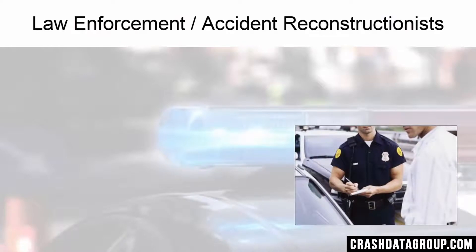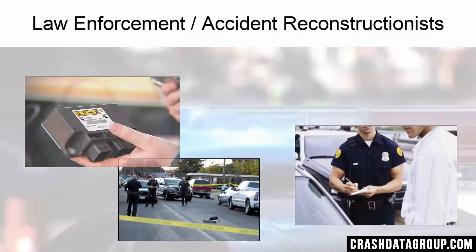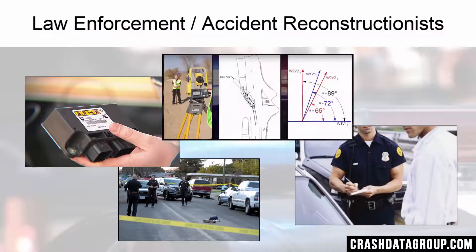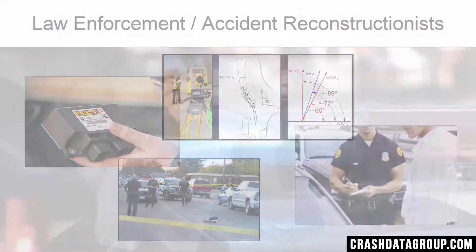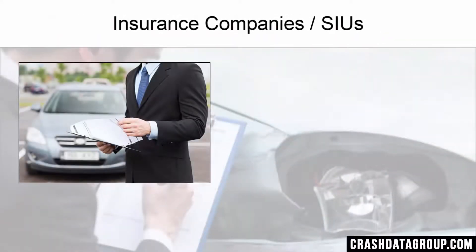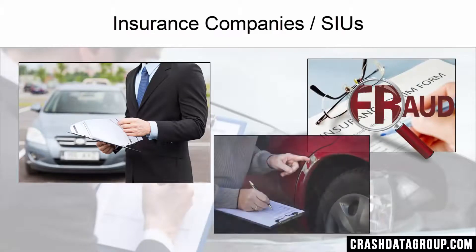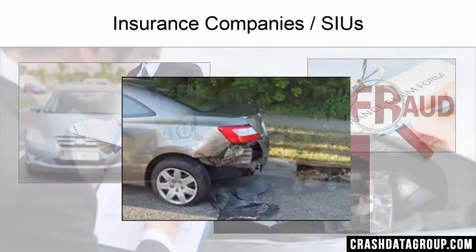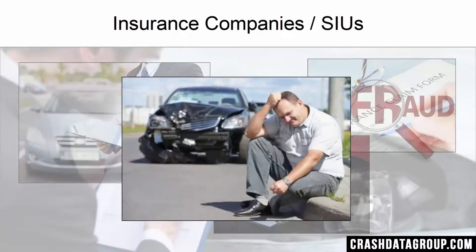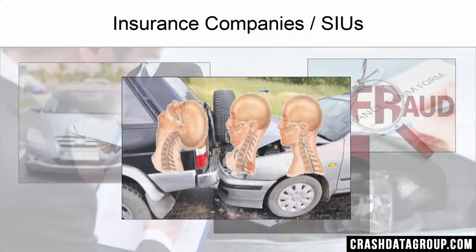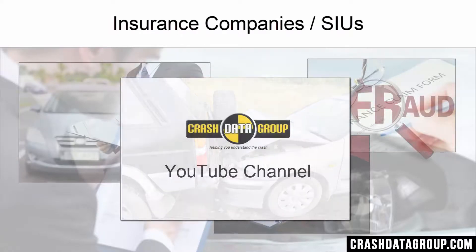Law enforcement and private accident reconstructionists use EDR data as part of their accident investigations and reconstructions. Things such as vehicle speed, delta V, steering input, and brake status can be used with other accident investigation methodologies to paint an accurate picture of how a traffic collision occurred. Insurance companies use EDR data to expose insurance fraud and determine liability in auto insurance claims. EDR data provides valuable evidence in hit-while-unattended claims, who-hit-whom-first claims, occupant detection — i.e., jumping claims — and many more. It is also used to determine the potential for bodily injury based on impact severity.